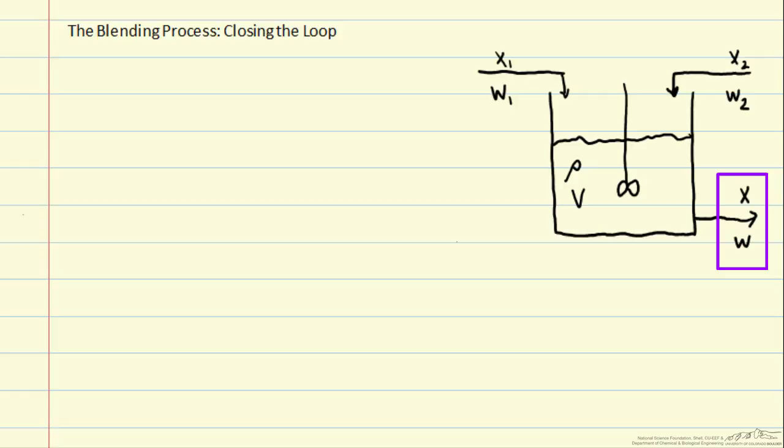So we're blending the two streams together, and we will continue to focus on the control variable of x, which is the mass fraction of species A in the tank, and our manipulated variable will continue to be w2, the mass flow rate in stream 2.